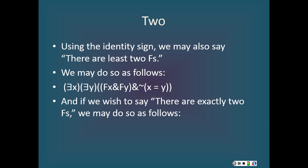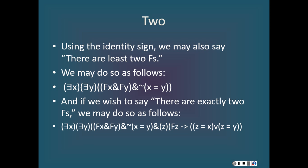We can also say there are exactly two F's in our system. We can do that as follows: there exists an x and there exists a y such that x is F and y is F, and it's not the case that x is identical to y, and for any z, if z is F then z is either identical to x or z is identical to y. A little reflection tells us that this is equivalent to the claim that there are exactly two F's.